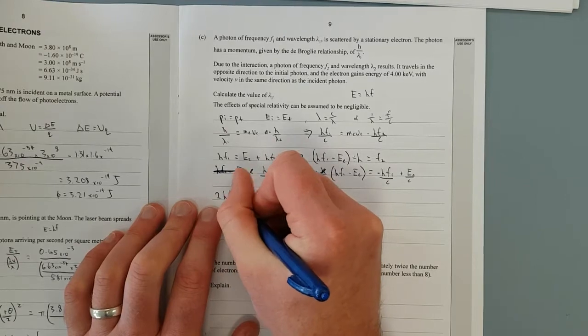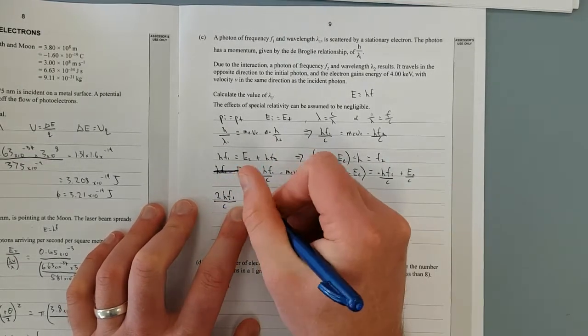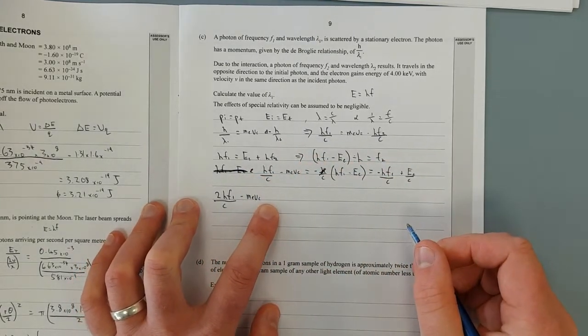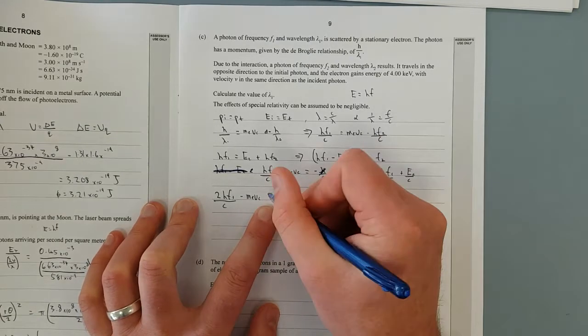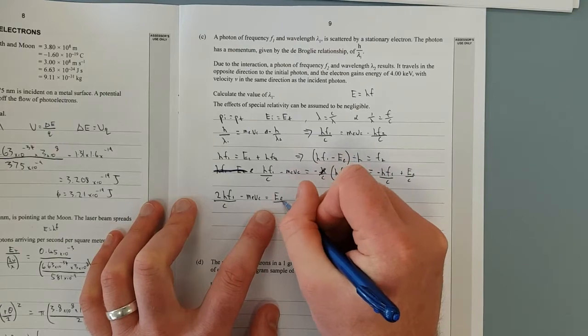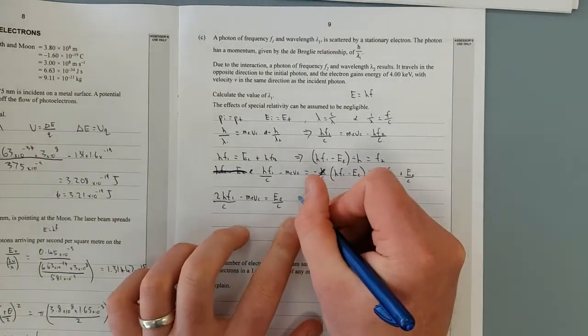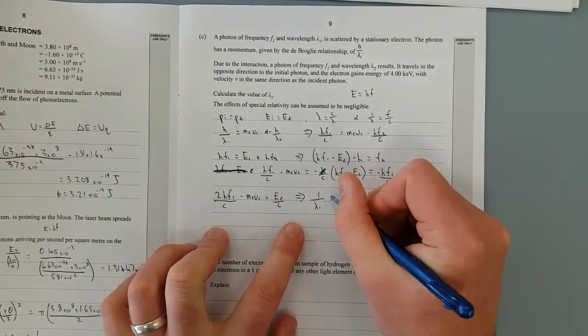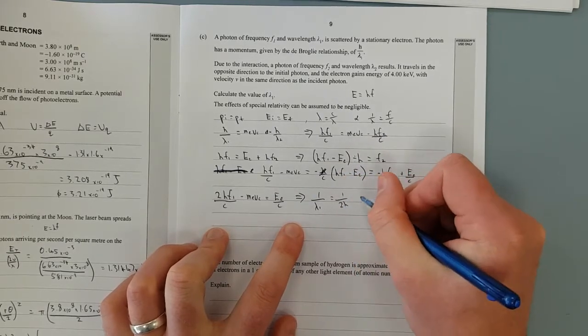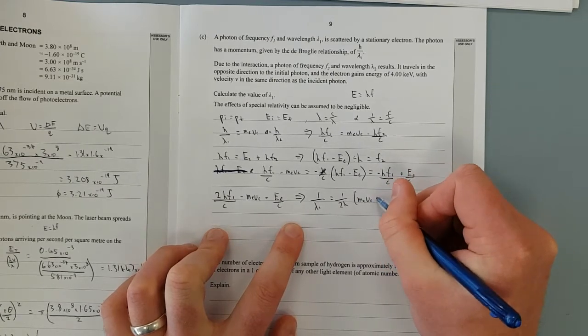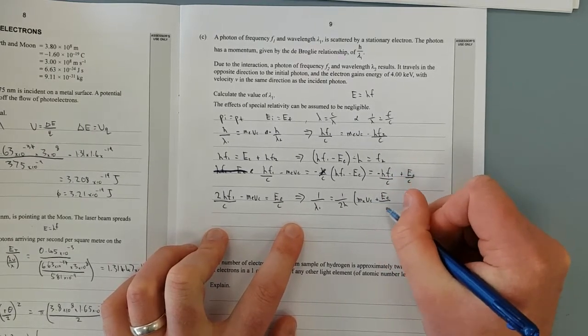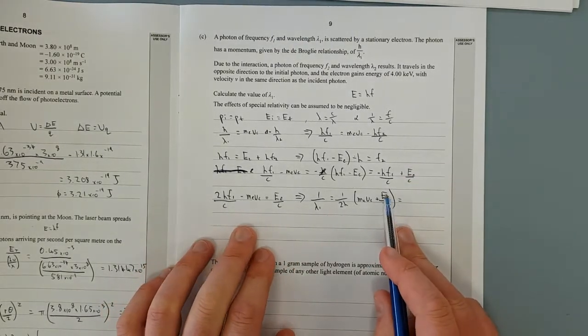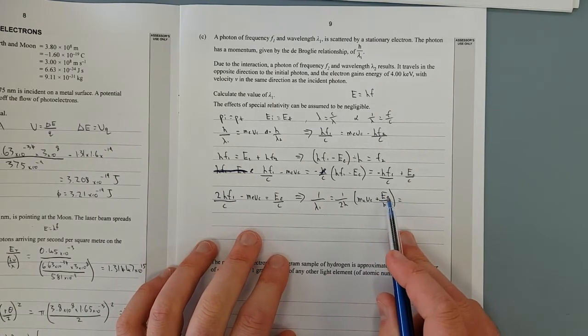So two HF1 over c minus mass electron velocity electron equals energy electron over c, because I've just made that a little bit neater. You can rearrange this to show that one over lambda, and I'll leave that up to you, equals one over two h, mass electron velocity electron, plus energy electron divided by Planck's constant, equals, if you substitute all the numbers, because we have all the numbers.